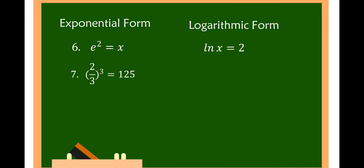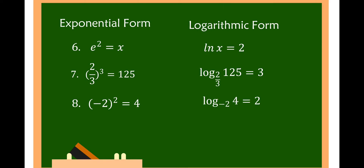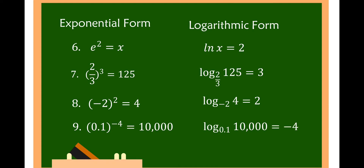We have 2/3 raised to the 3rd power is equal to 125, so in logarithmic form that is log of 125 to the base of 2/3 is equal to 3. Negative 2 squared is equal to 4; in logarithmic form, the logarithm of 4 to the base of negative 2 is equal to 2. And 0.1 raised to negative 4 is equal to 10,000; so the logarithm of 10,000 to the base of 0.1 is equal to negative 4.